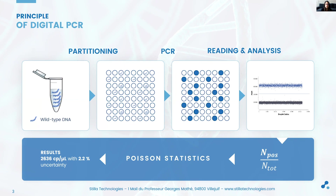The key step in digital PCR is the partitioning of the reaction mix into a large number of small compartments of the same size. In the NICA system, partitioning consists in generating a water-in-oil emulsion of the mix. As the emulsion is generated, the target sequences are randomly distributed in the droplets such that some droplets contain one or at least one sequence of interest, and some don't contain any.